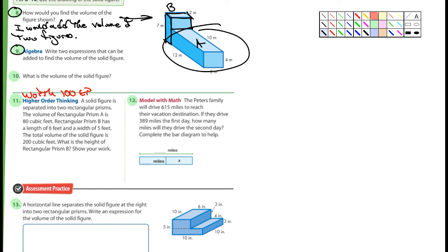Number nine, it says, write two expressions that can be added to find the volume of the solid figure. Two expressions. So, you could write length times width times height. There's two figures plus length times width times height. And then it says an expression. So, I'm not going to have an equal sign in that. You're adding two separate prisms. And then finally it says, what is the volume of the solid figure? So, finally, you just need to answer it. You're going to add up A and B, or however you divide them, whatever you want to call them.